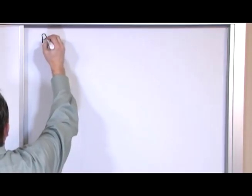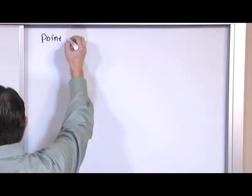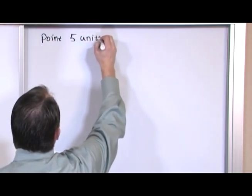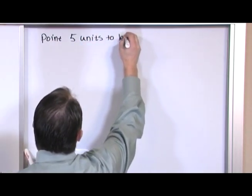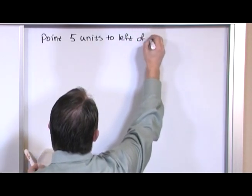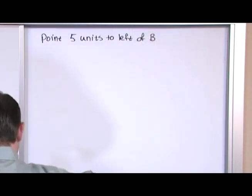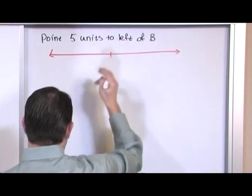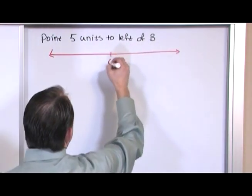We want a point five units to the left of B. Five units to the left of B, and let's figure out where we're going to put B this time just to give you some practice. We're going to stick it in exactly the same place.